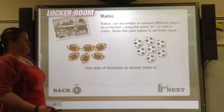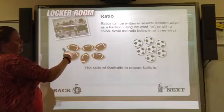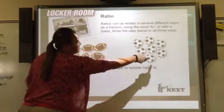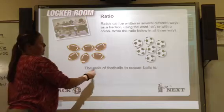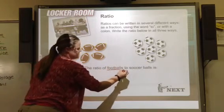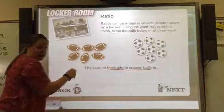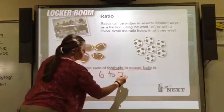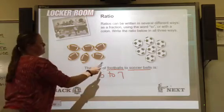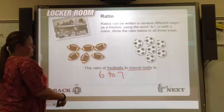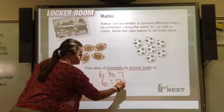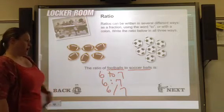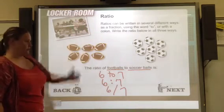Ratios can be written in several different ways — as fractions, using the word 'to,' or with a colon. We're going to do an example writing the ratio all three ways. We have six footballs and seven soccer balls. The ratio of footballs to soccer balls is six to seven, or six colon seven, or six over seven. They all represent the same ratio of six footballs to seven soccer balls.